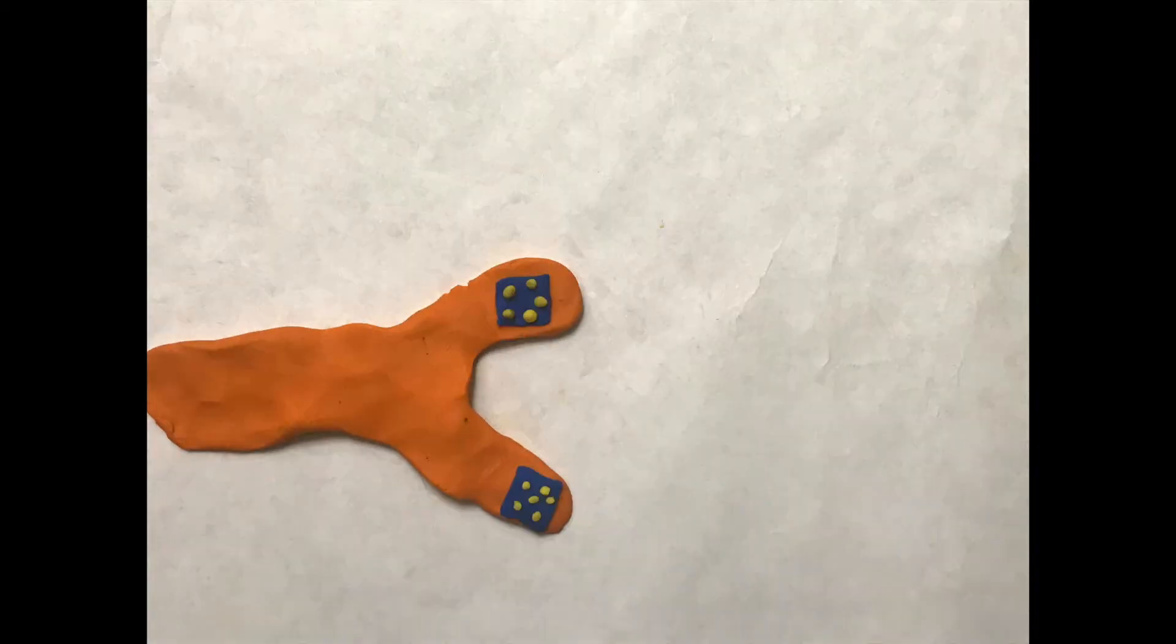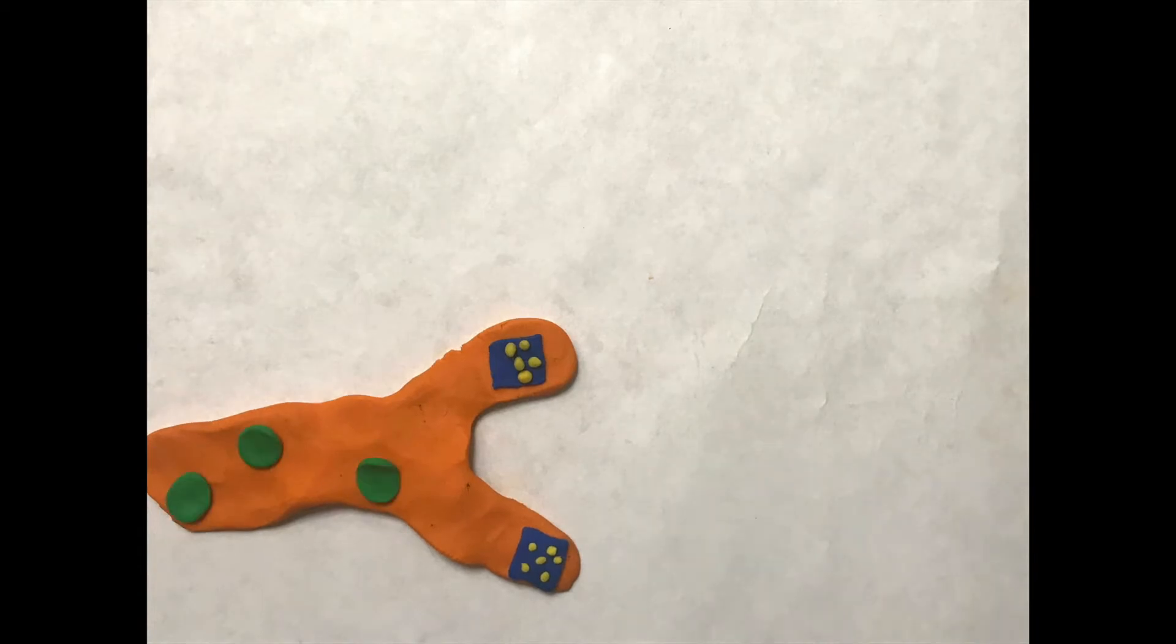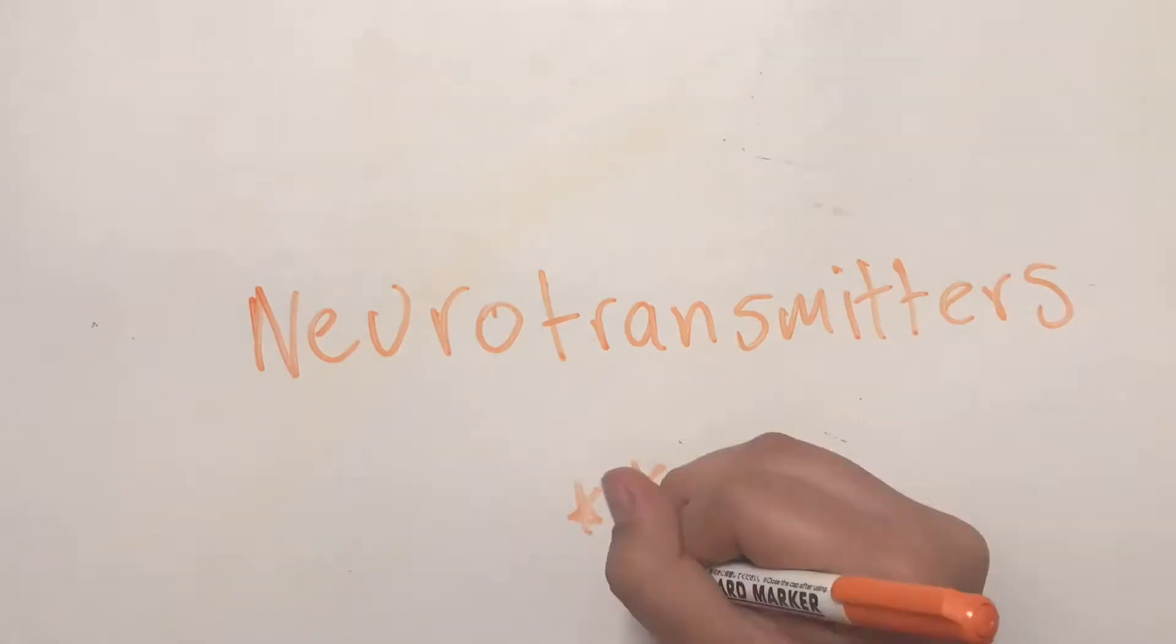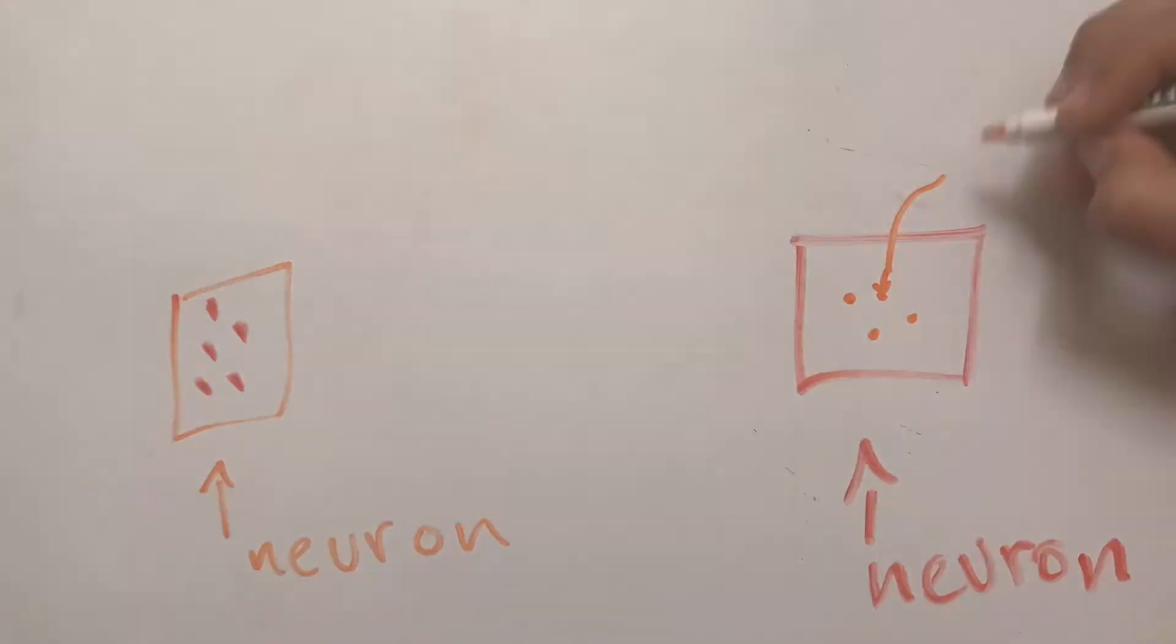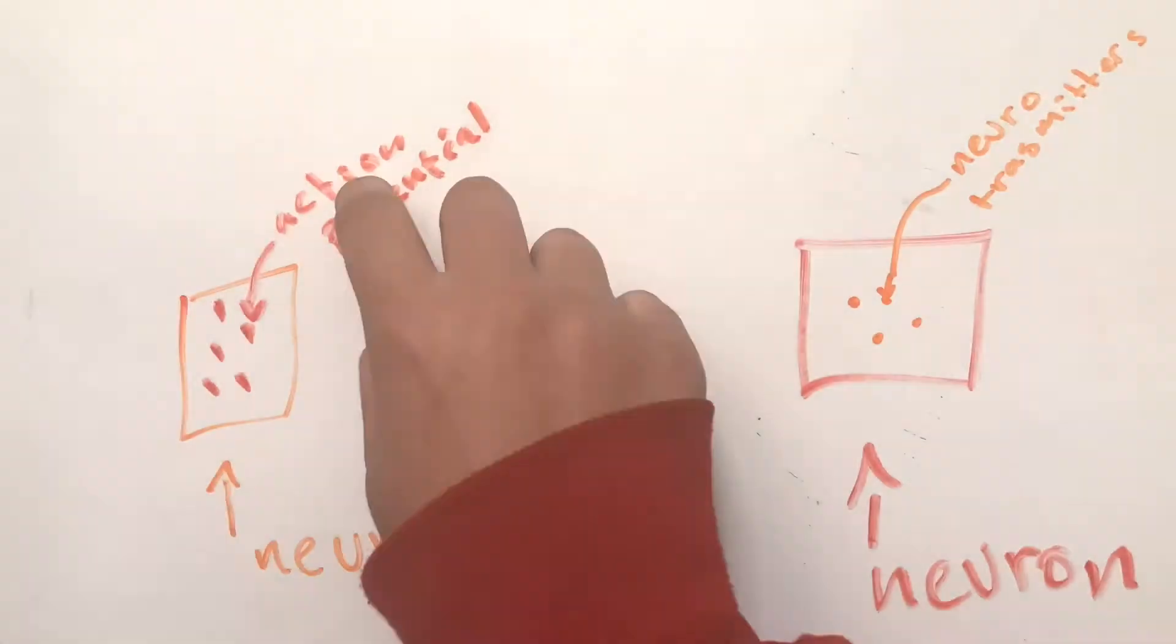which contain synaptic vesicles. Synaptic vesicles hold chemicals called neurotransmitters. In order to convey the electric message from one neuron to the next, the message must be turned into a chemical.